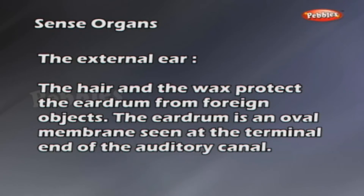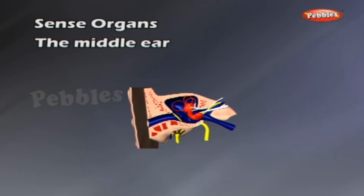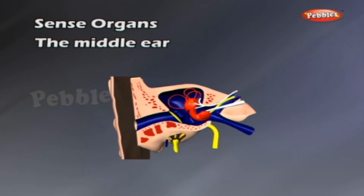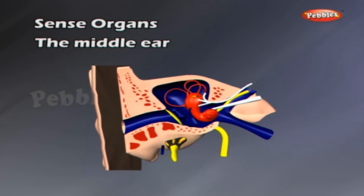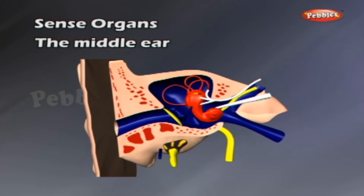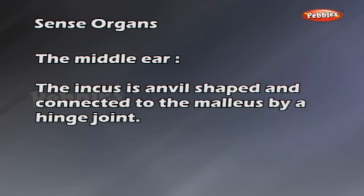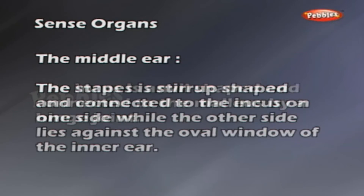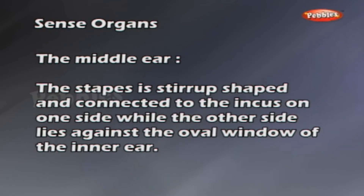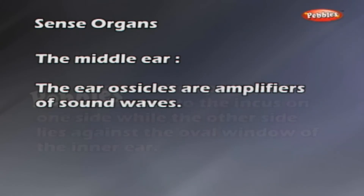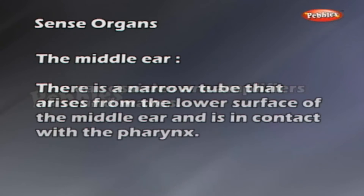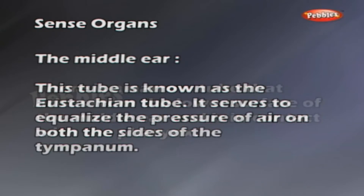The middle ear is an air-filled cavity which consists of three auditory ossicles, namely the malleus, the incus, and stapes. The malleus is hammer-shaped and is attached to the eardrum. The incus is anvil-shaped and connected to the malleus by a hinge joint. The stapes is stirrup-shaped and connected to the incus on one side, while the other side lies against the oval window of the inner ear. The ear ossicles are amplifiers of sound waves. There is a narrow tube called the eustachian tube that arises from the lower surface of the middle ear and connects to the pharynx. It serves to equalize the pressure of air on both sides of the tympanum.